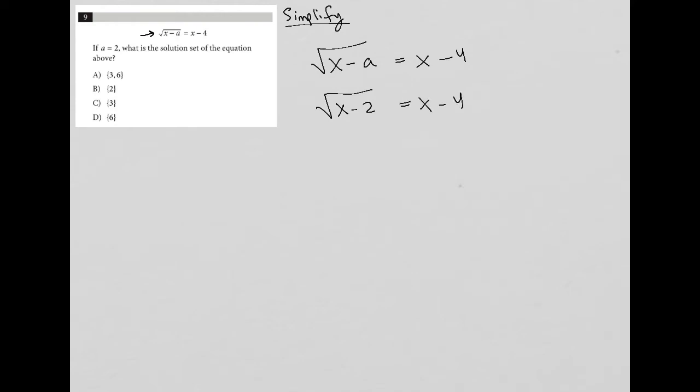And as suspected, to simplify this, I do need to square both sides of this equation because that's the only way for me to get rid of the square root here. So when I square the left side, it cancels out the square root, leaving me with just x minus 2.